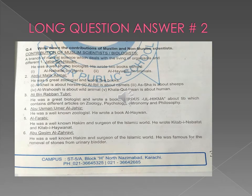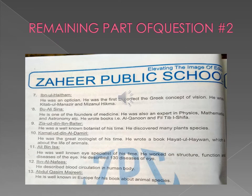Question number 2 long: you have to write down the contribution of Muslim scientists. In question number 2, you have to write only ibn al-Haitam, Abu Ali Sina, Ziauddin, ibn al-Betar, Ali bin Nisa, and ibn al-Nafis.